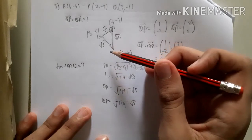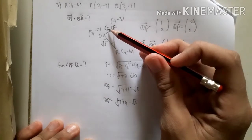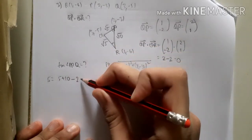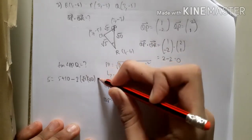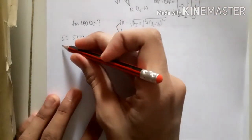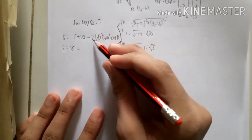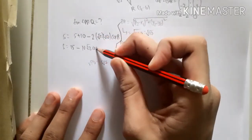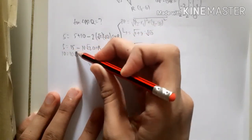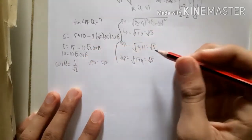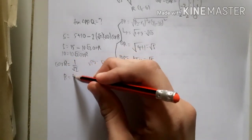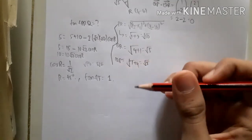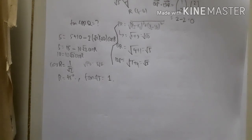Using the cosine rule to find angle R: QP² = QR² + PR² - 2·QR·PR·cos(R), so 5 = 5 + 10 - 2·√5·√10·cos(R), giving 5 = 15 - 10√2·cos(R). Therefore cos(R) = 10/(10√2) = 1/√2, so angle R = 45°. The tangent of angle PRQ is tan(45°) = 1. That completes SensuMath 2014 Part 2.